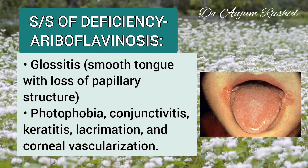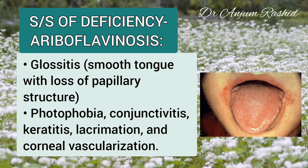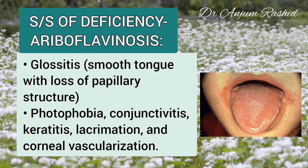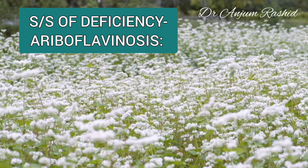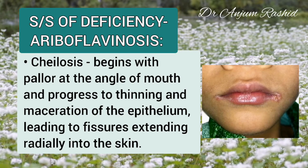The effects of riboflavin deficiency — this condition is called ariboflavinosis. There is glossitis, which is smooth tongue with loss of papillary structure. Eye signs include photophobia, conjunctivitis, keratitis, lacrimation, or corneal vascularization. Another important sign is cheilosis.